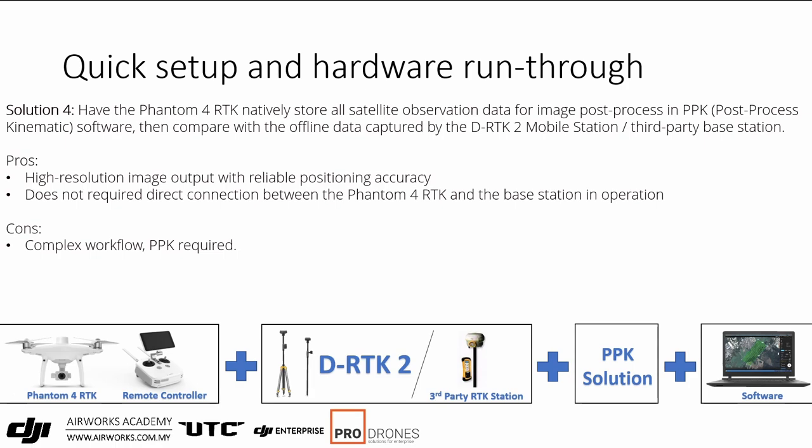The fourth option is to fly without RTK correction, store everything, and post-process later. You'd need a third-party base station or the DRTK2 to collect RINEX data, then sync that data with the drone's RINEX output to determine precise positions. It's a complex workflow, but relatively reliable since it follows the same process as working with a base station. A downside is you might fly and only discover back at the office that the data is wrong.